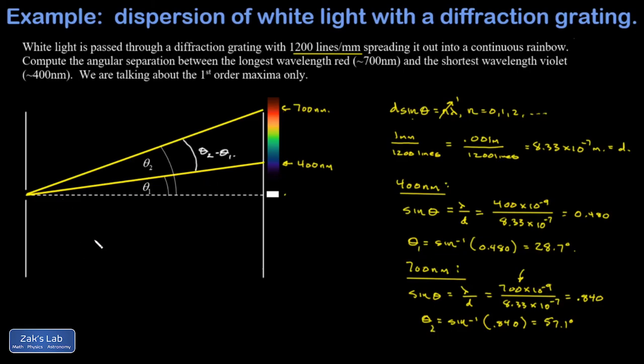Really what we're after is the angular separation between those two fringes. So to wrap things up, theta 2 minus theta 1 is 28.4 degrees. So the angular size of the rainbow we produced with this diffraction grating by passing a white beam of light through it is 28.4 degrees.